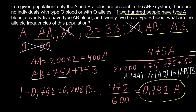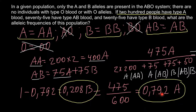So here are the two frequencies: 0.792 for allele A and 0.208 for allele B in this gene pool. We can also give the answer as a percentage by multiplying both numbers by 100, or by moving the decimal point two places to the right. So the frequency of allele B is 20.8% and the frequency of allele A is 79.2%.